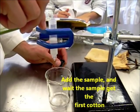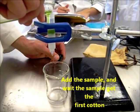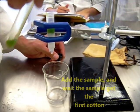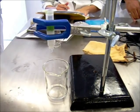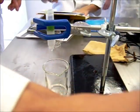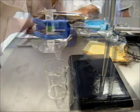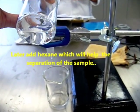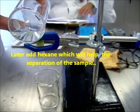Hydrate the column with the solvent and wait until the sample gets the first cotton. Later add the solvent which will allow the separation of the sample.